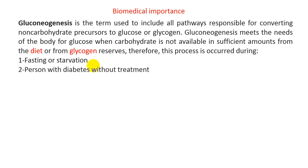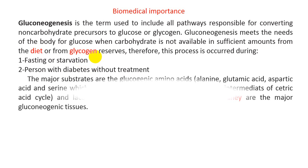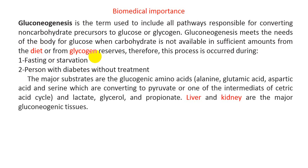The second case is somebody with diabetes who hasn't been treated with medicine. Therefore we don't have enough glucose inside the cell, because all the glucose is outside the cell in the bloodstream. In a person with diabetes mellitus without treatment, all the glucose is in the bloodstream, so there is deficiency of glucose inside the cell.